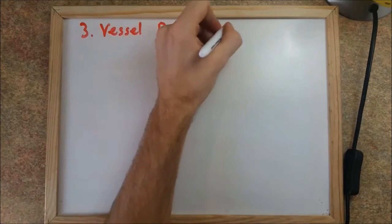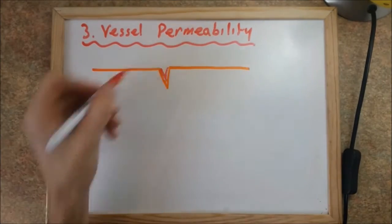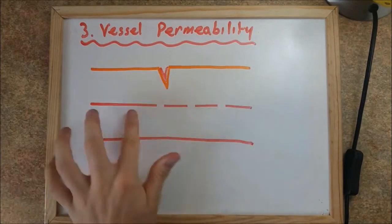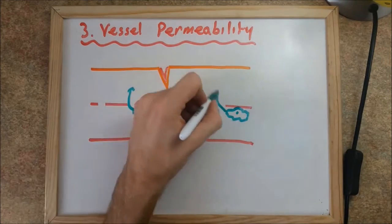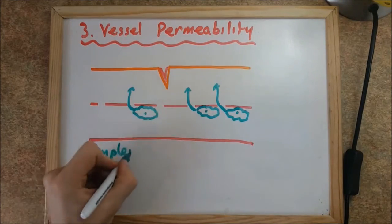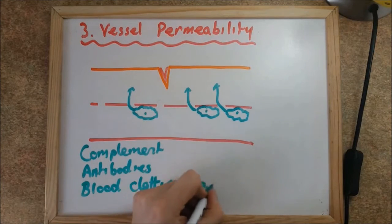The third reaction is vessel permeability. This is mediated by the prostaglandins and leukotrienes, which allow fluid to leak from the vessels to the surrounding tissue. This fluid is rich in complement proteins, antibodies, and blood clotting factors such as fibrinogen.